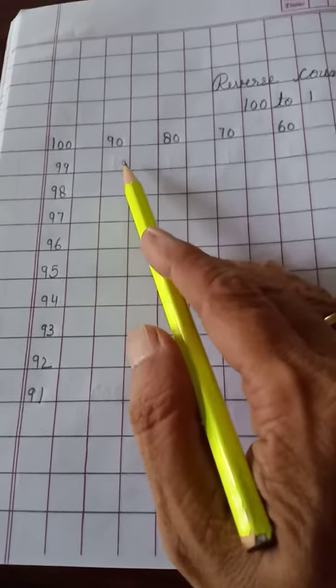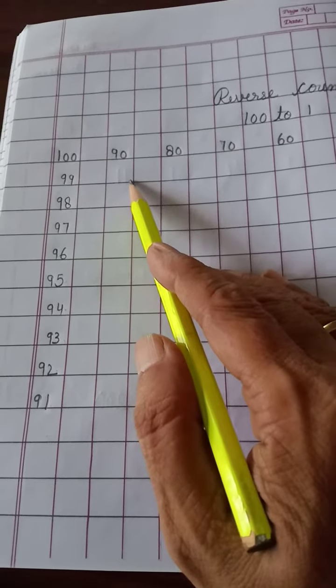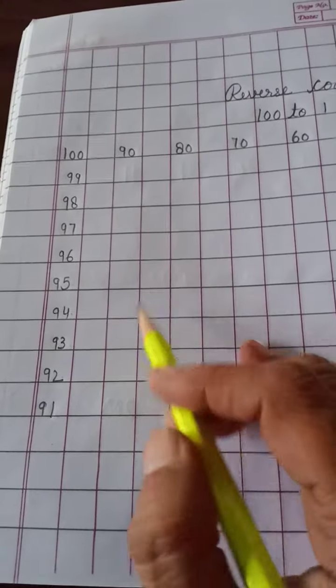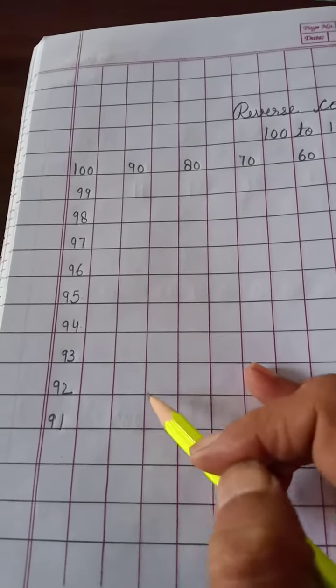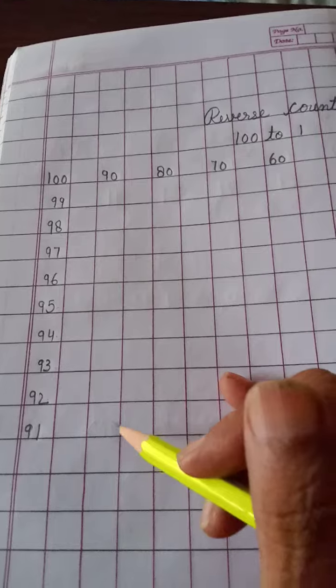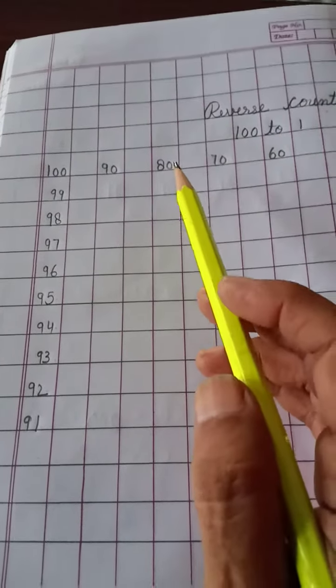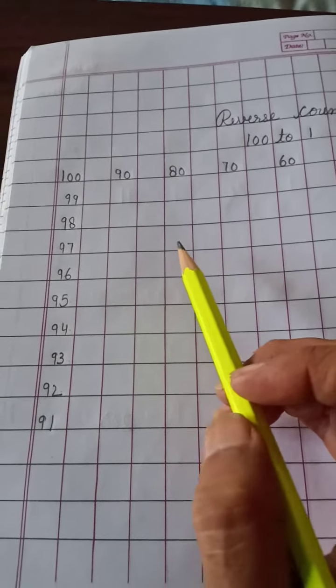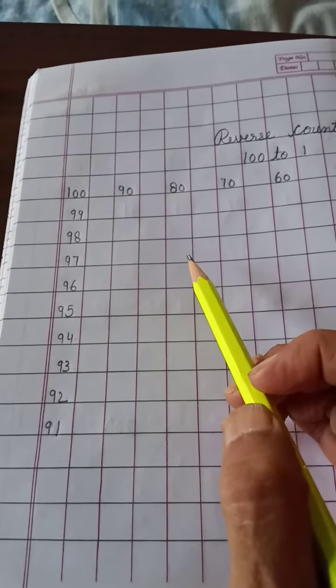90, 89, 88, 87, 86, 85, 84, 83, 82 and 81. 80. 79 उपर आता है. 79, 78, 77.